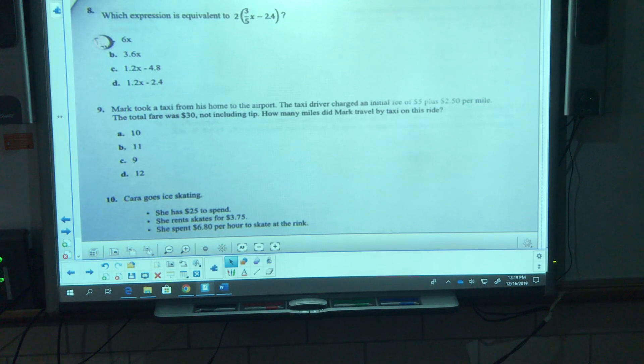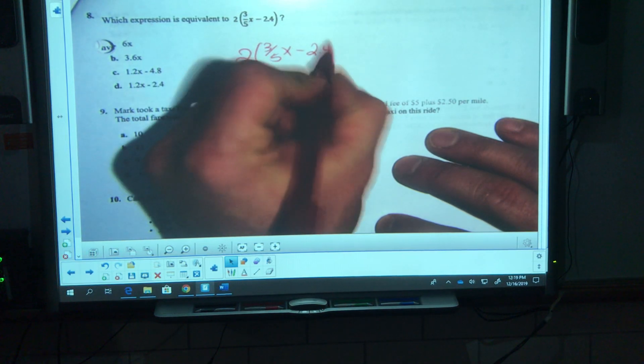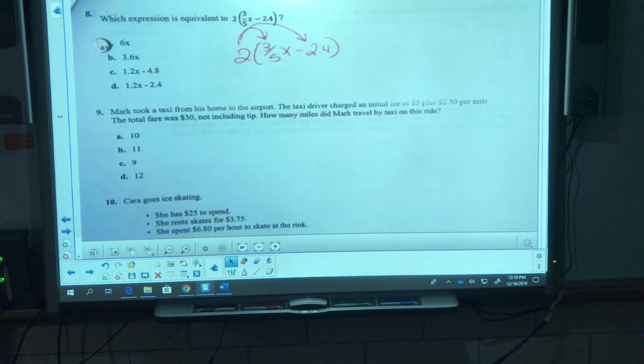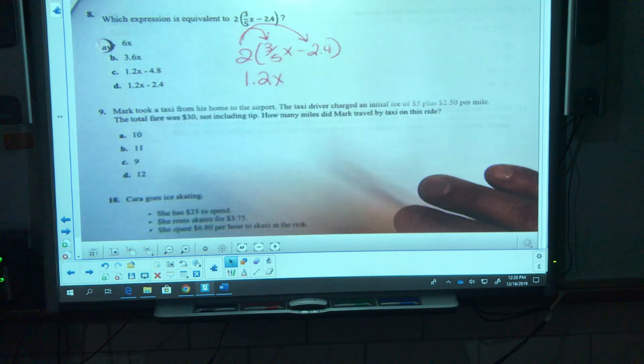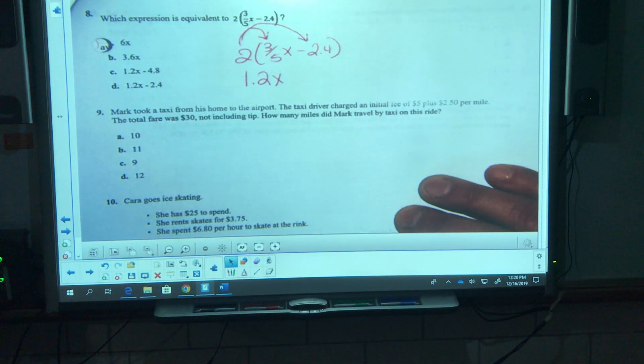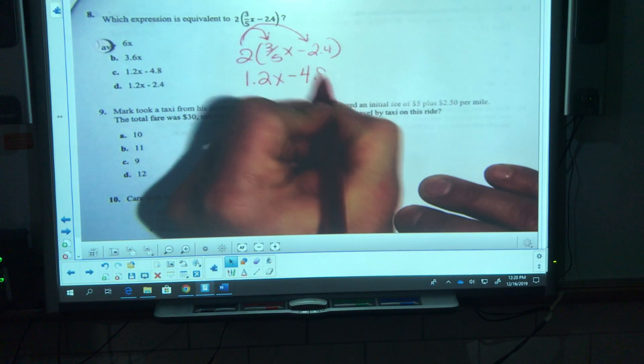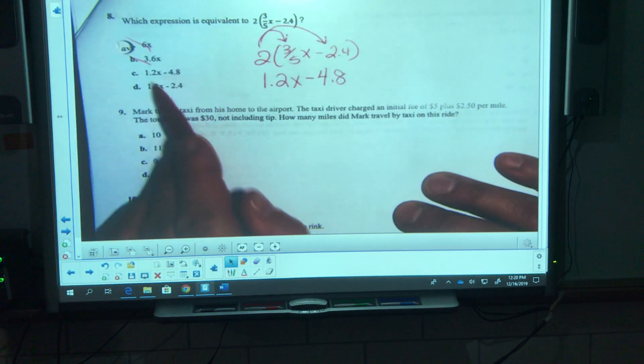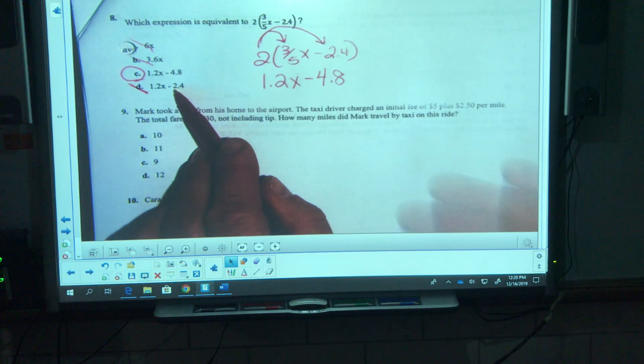Number eight is on page three for me, might be on page two for you. Which expression is equivalent to 2 times (3/5x minus 2.4)? Distributive property. I need to multiply that by two. Two times 3/5 is one and one fifth, which is also 1.2. Two times 2.4 is 4.8. It's gonna be a minus 4.8. I got it, can't combine those all together, so it can't be b or c. Negative 4.8, there, that looks right to me.